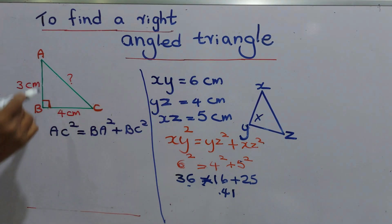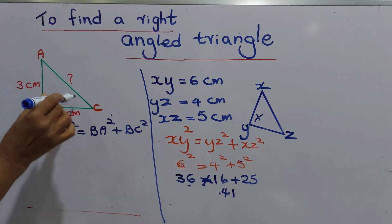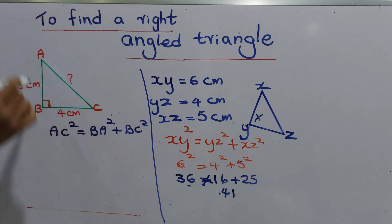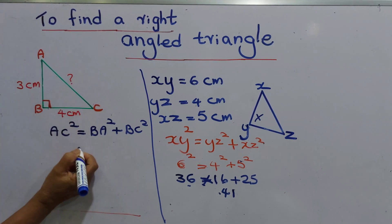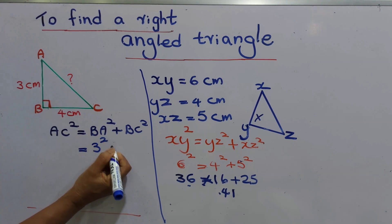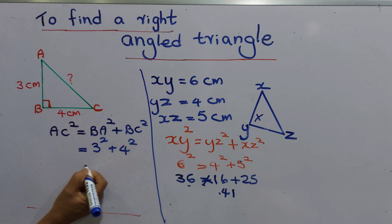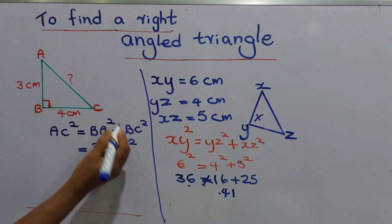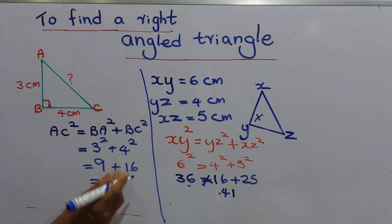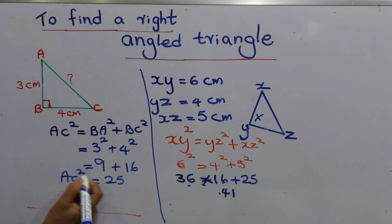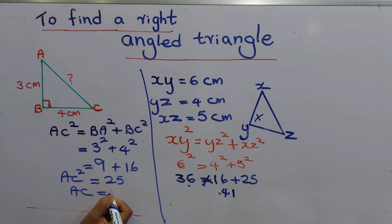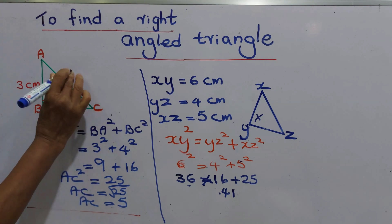We can also apply the Pythagoras relationship to find the unknown length of a side. Here we need to find the value of AC. AC squared equals BA squared plus BC squared, that is 3 squared plus 4 squared. 3 squared is 9, and 4 squared is 16, so AC squared equals 25. Then we find the square root of 25, which is 5. So the value of AC is 5 centimeters.